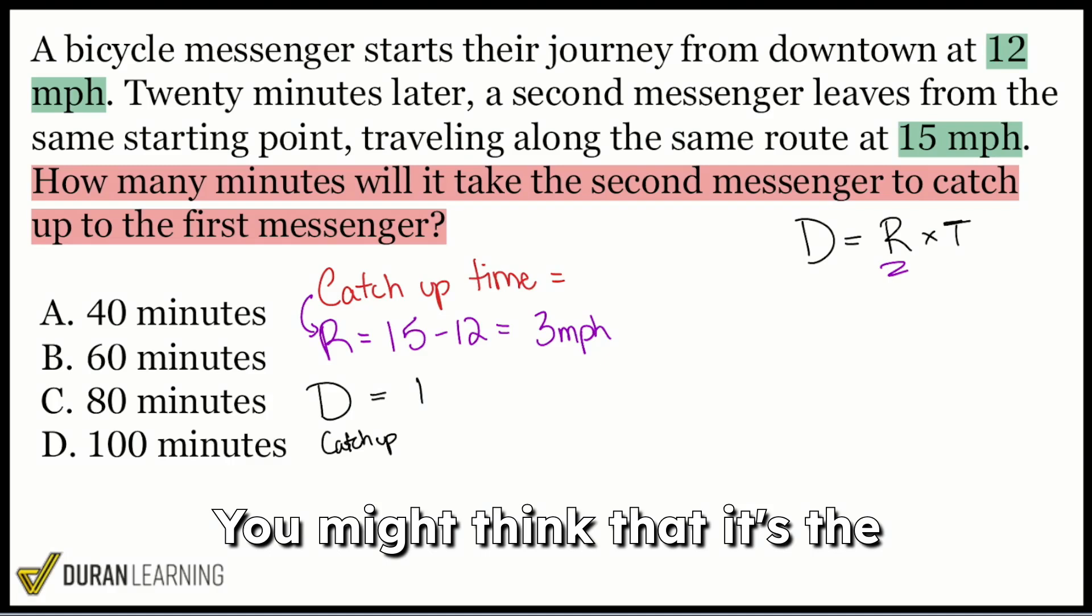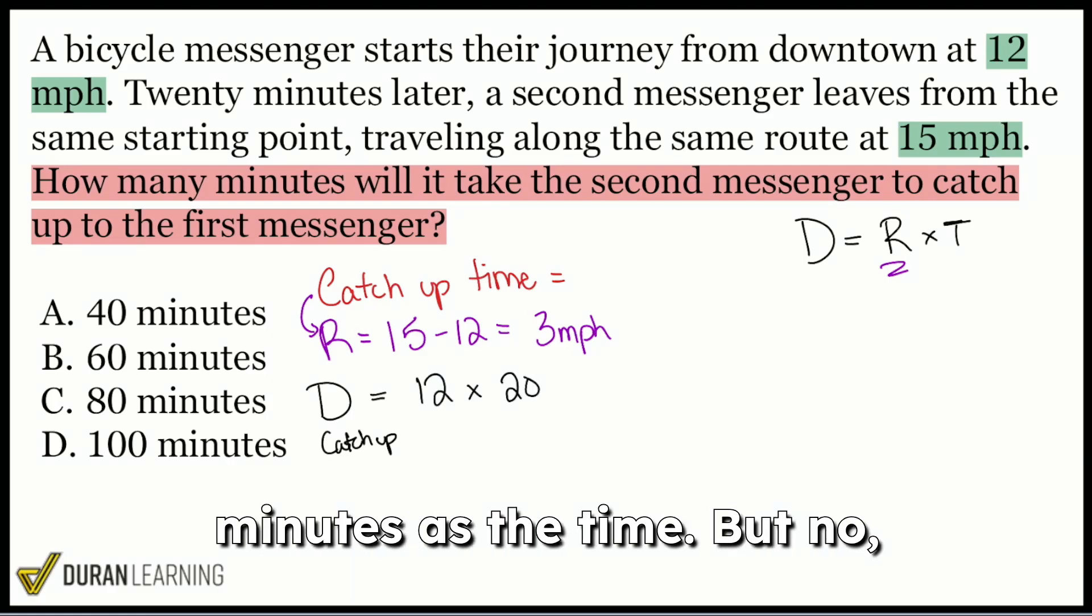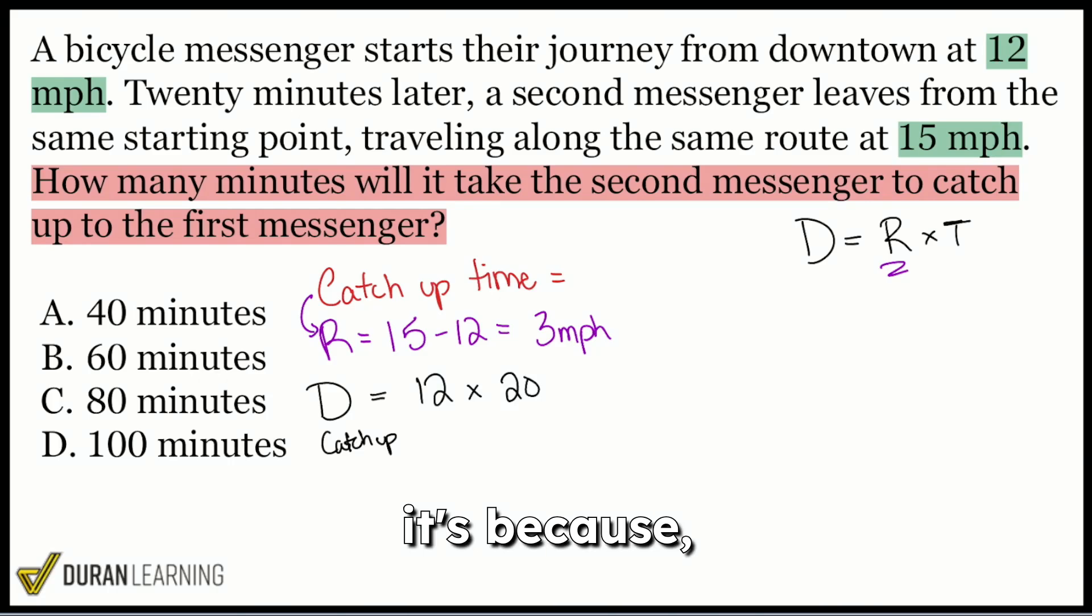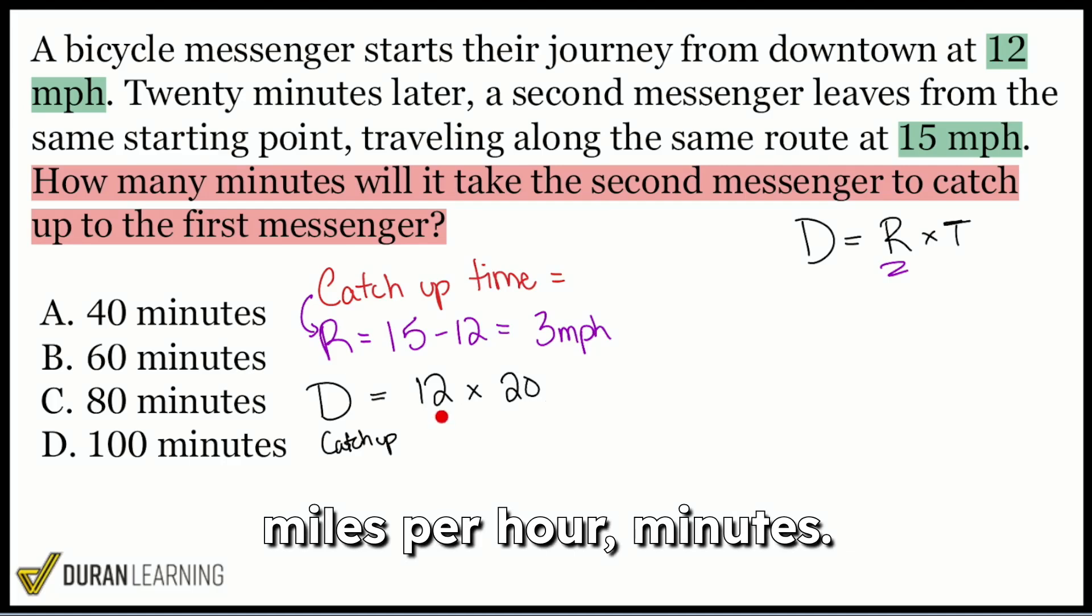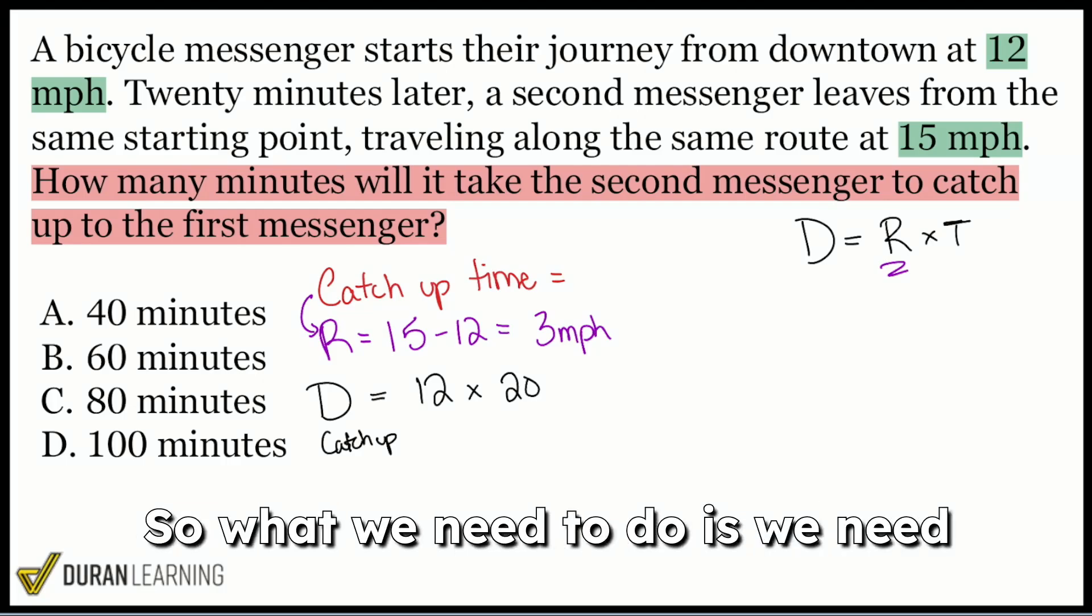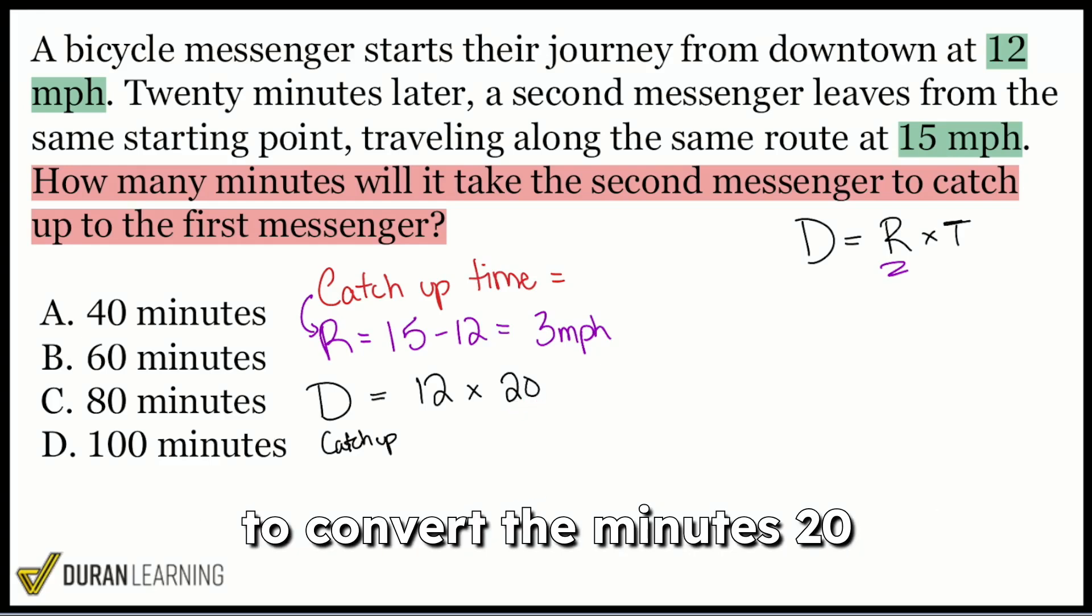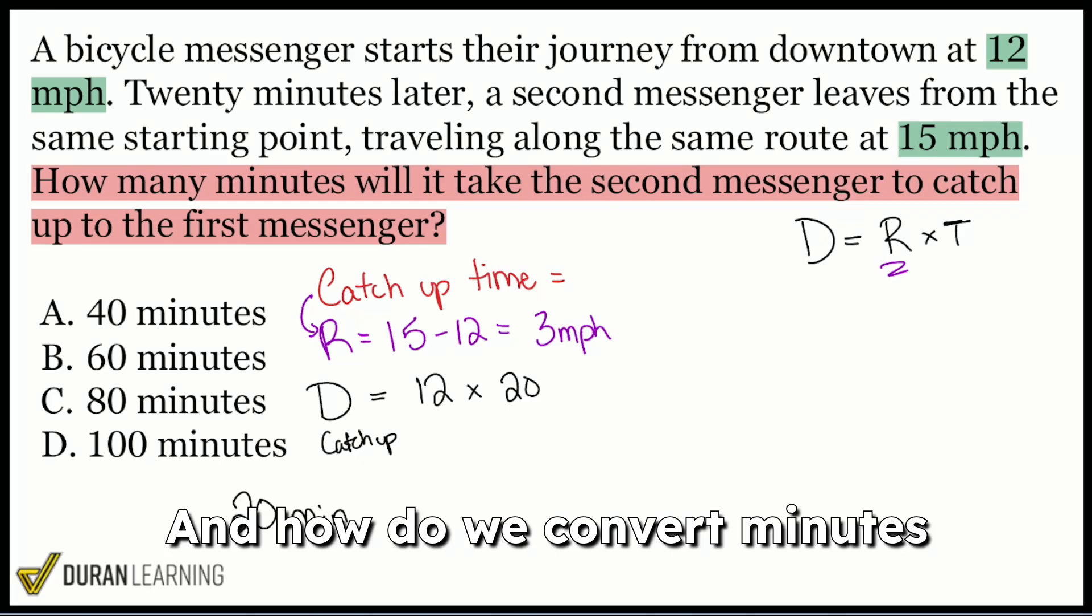Be careful here. You might think that it's the rate 12 miles an hour times 20 minutes as the time. But no, because think about it. 12 miles an hour, 20 minutes, miles per hour, minutes. That doesn't make sense, right? So what we need to do is we need to convert the minutes, 20 minutes into hours. And how do we convert minutes to hours?